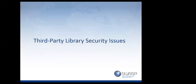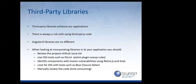Moving on to third-party library security issues. As developers we want to enhance applications by including third-party libraries, but there's always a risk with third-party code — AngularJS libraries are no different. When incorporating libraries, review the GitHub issue list for reported XSS or security issues. Use open-source linting frameworks such as ESLint with the ScanJS rules plugin. Try to identify components with known vulnerabilities using RetireJS or Snyk — they have command-line tools, browser implementations, Burp Suite plugins, and Zap plugins. You can also use DOMClosureDetect for DOM-based XSS and manually review the code.